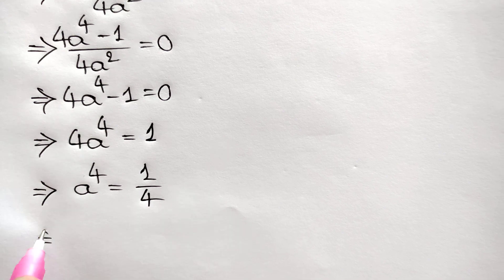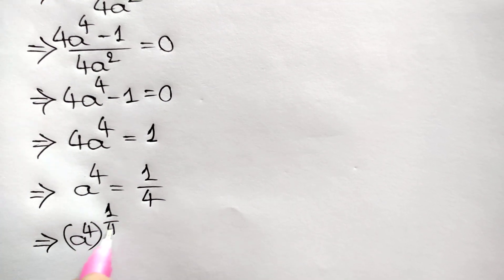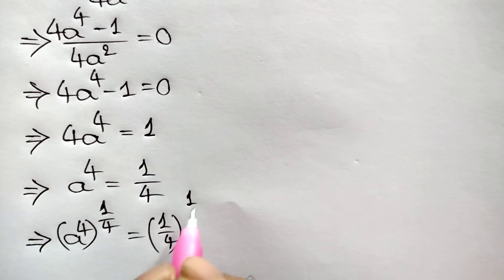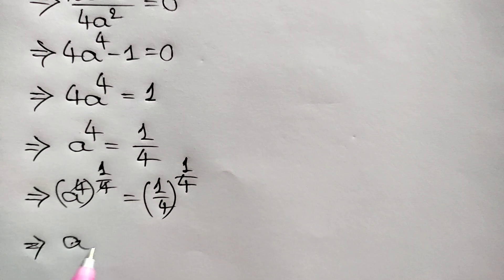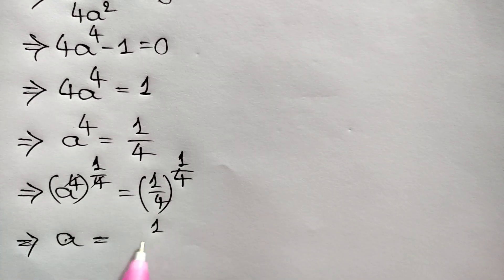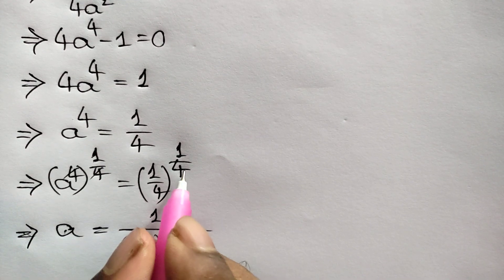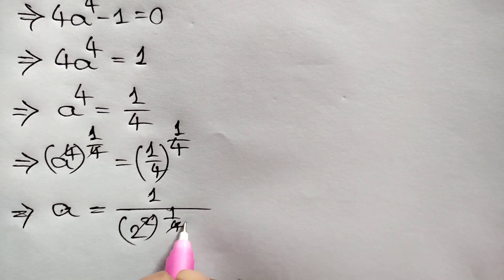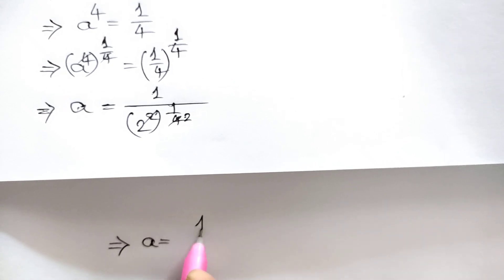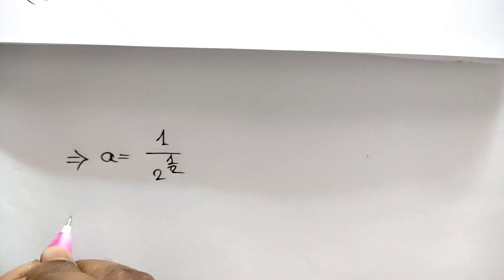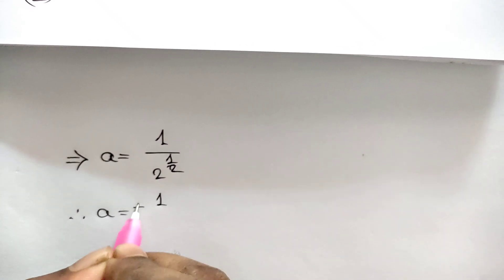Taking the power of 1/4 on both sides: a = (1/4)^(1/4). Since 4 = 2², we get a = 1/(2^(1/2)), which simplifies to a = ±1/√2.